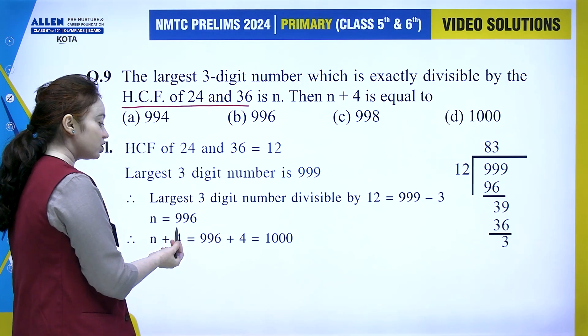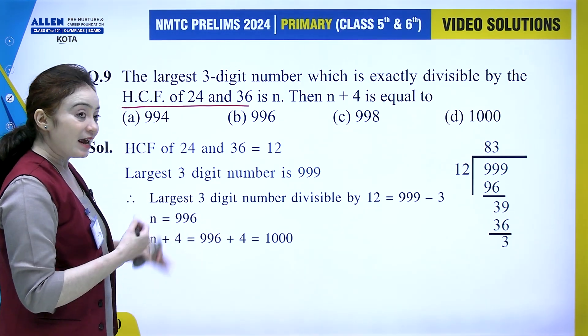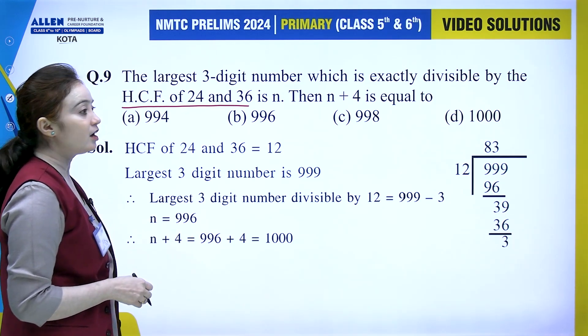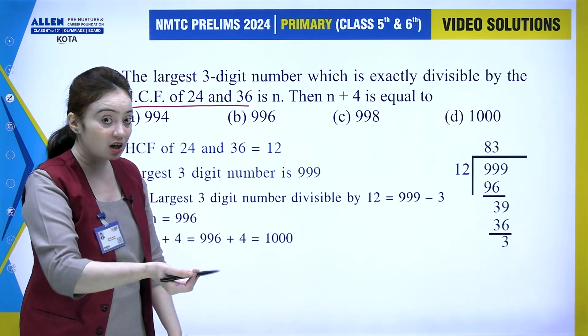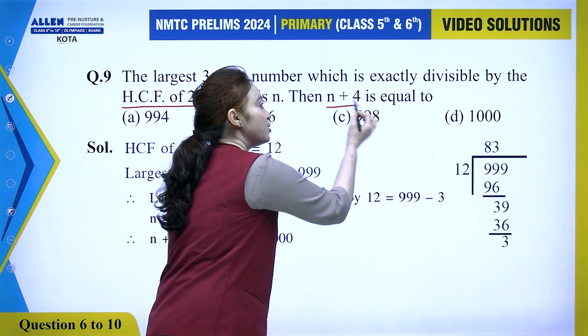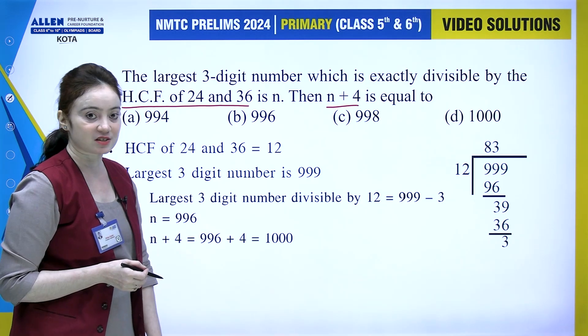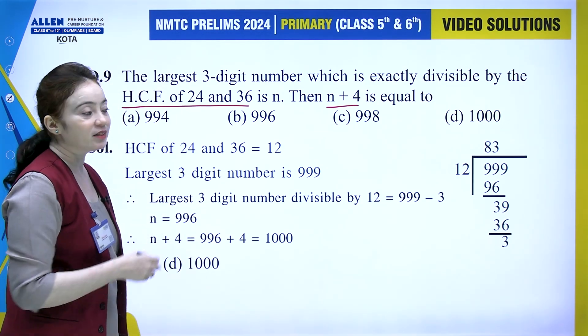We need to find n plus 4. If we add 4 to 996, that gives 1000. So the correct option is the one with value 1000, which is the correct answer.